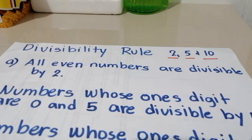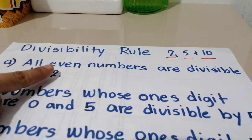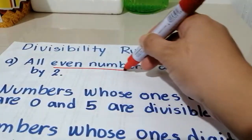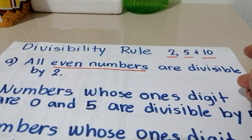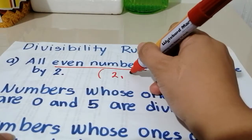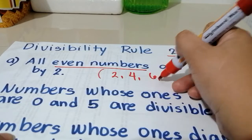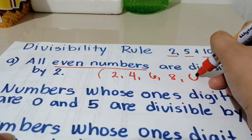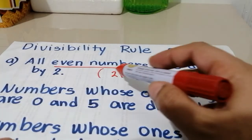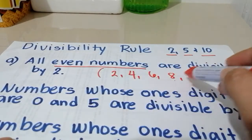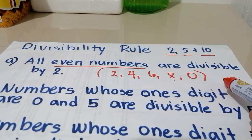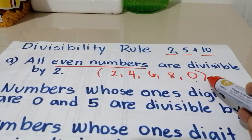So for the divisibility rule for 2, all even numbers are divisible by 2. When we say even numbers, what does it mean? If the number ends with 2, 4, 6, 8, and 0 — if the ones digit of the number ends with any of these, those are all even numbers, meaning that number is divisible by 2.